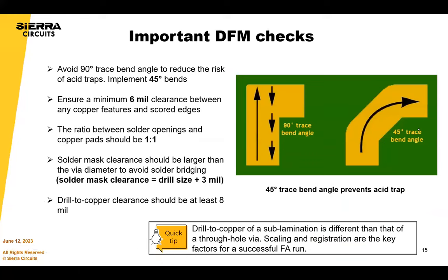Some important DFM checks: reduce sharp 90-degree angles, which can cause acid traps during etching. Avoid slivers in your designs, which can cause flaking during the resist manufacturing process — these would be flagged at the DFM stage, but better to avoid them in the design output stage. In terms of clearances, ensure enough clearance to the edge of the board. Our routing machines are now at plus or minus 2 mil tolerance on routed features.